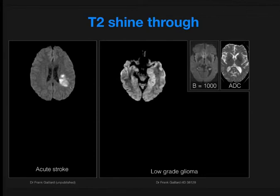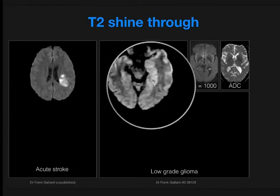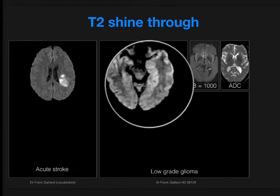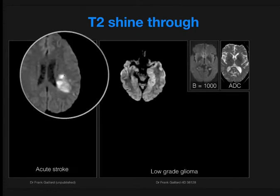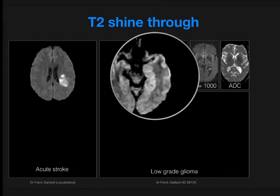Putting aside normal images, we should talk about the concept of T2 shine-through. There's a lot of confusion around what this means, but most of us know that trying to interpret DWI or B1000 images in isolation can lead to difficulty distinguishing true restricted diffusion from T2 shine-through. On this side, we have an acute ischemic stroke with very high DWI signal, and here a low-grade glioma demonstrates some elevation of signal. In the glioma case it's hard to know, because gliomas can demonstrate variable diffusion restriction depending on cellularity and grade.